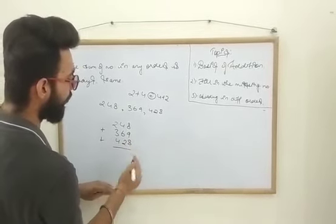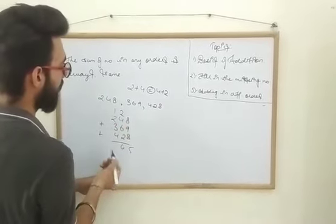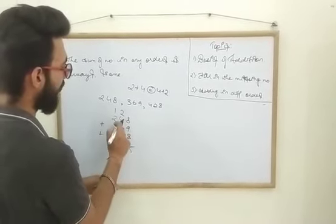8 and 8 is 16, 16 and 9 is 25. Write 5. 2 is 6 and 6 is 12, which is 14. Write 4, carry 1. 4, 5. 5 and 5 is again 10.